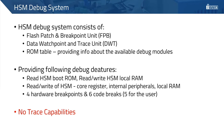Let's talk about the HSM debug system. The debug system consists of a Flash Patch and Breakpoint unit (FPB), a Data Watchpoint and Trace unit (DWT), and the ROM table. This debug system provides features such as read access to HSM boot ROM, read-write access to HSM local RAM, read-write access to HSM core registers, bridge module registers, or any memory-mapped peripherals. The DWT module provides four comparators which can only be used as hardware breakpoints.